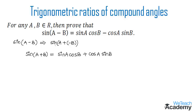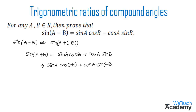Now let us replace a with a and b with minus b in the formula. By replacing, we get sin a into cos(-b), plus cos a into sin(-b). So by replacing b with minus b, we get sin(-b) here.